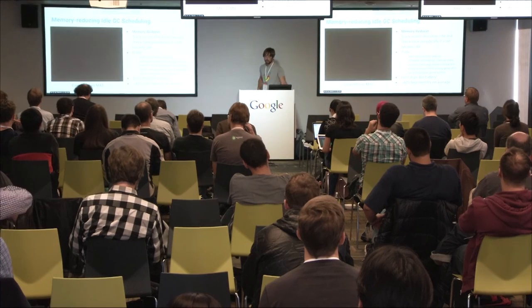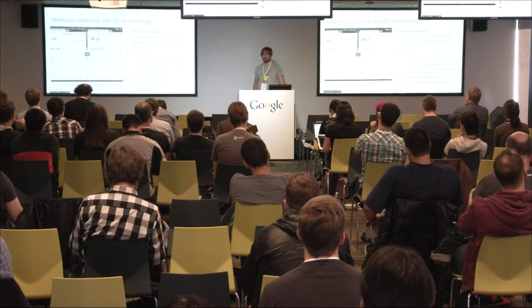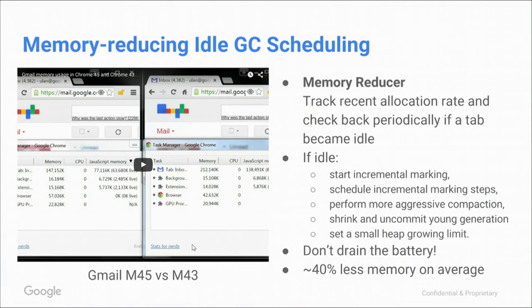You have to be really careful not to drain the battery. The memory reducer has to be carefully tuned to not kick in too often. We had a regression where the memory reducer happily kicked in every five seconds because the app looked idle, non-idle, idle, non-idle, and they played ping-pong. Your phone or computer doesn't really like that. Overall, on heavy Google products that sit idle for some time, this feature results in using less than 40% less memory, which is really nice.